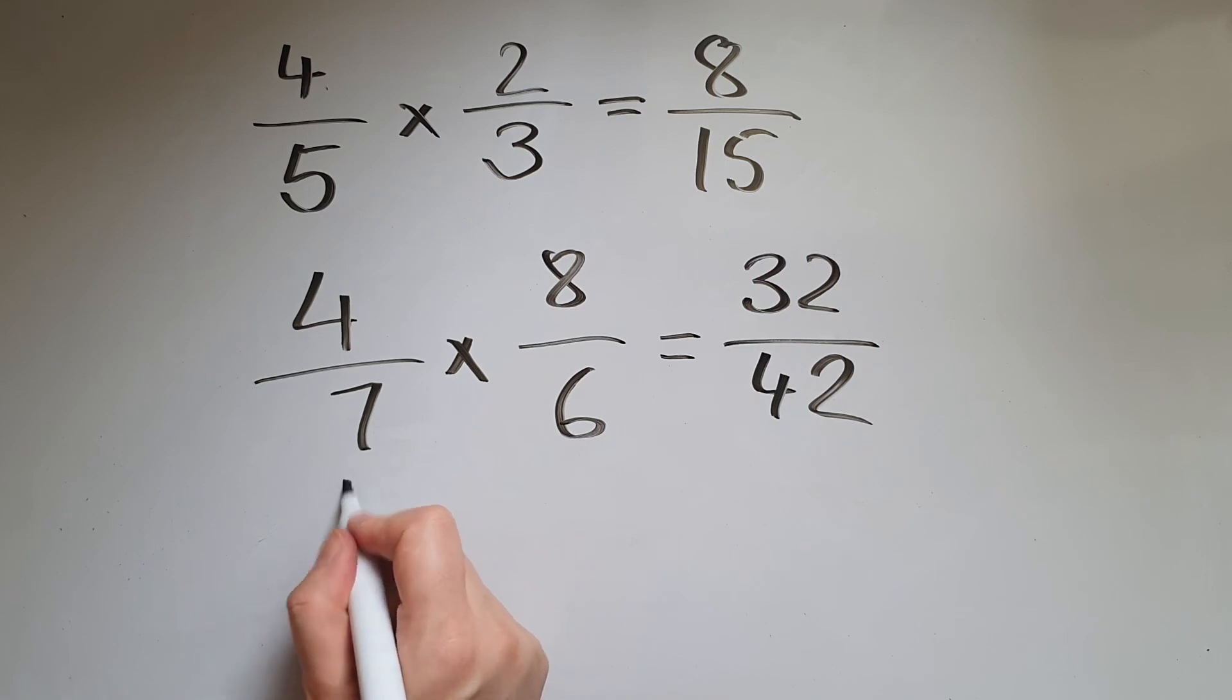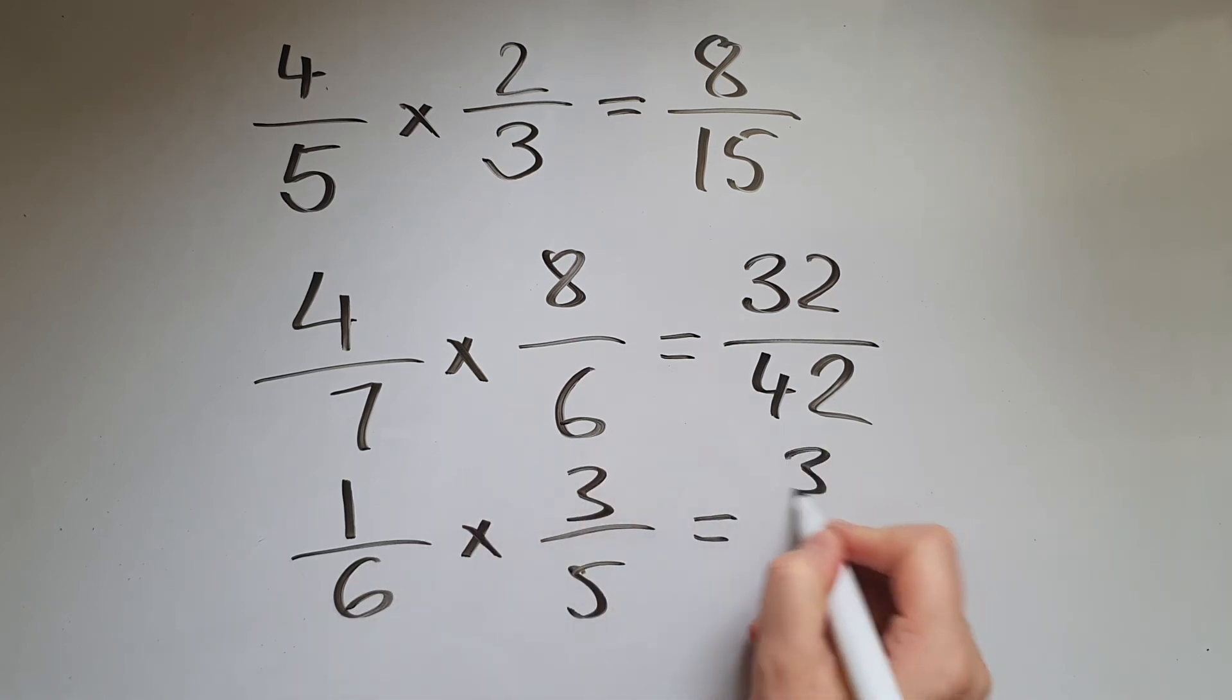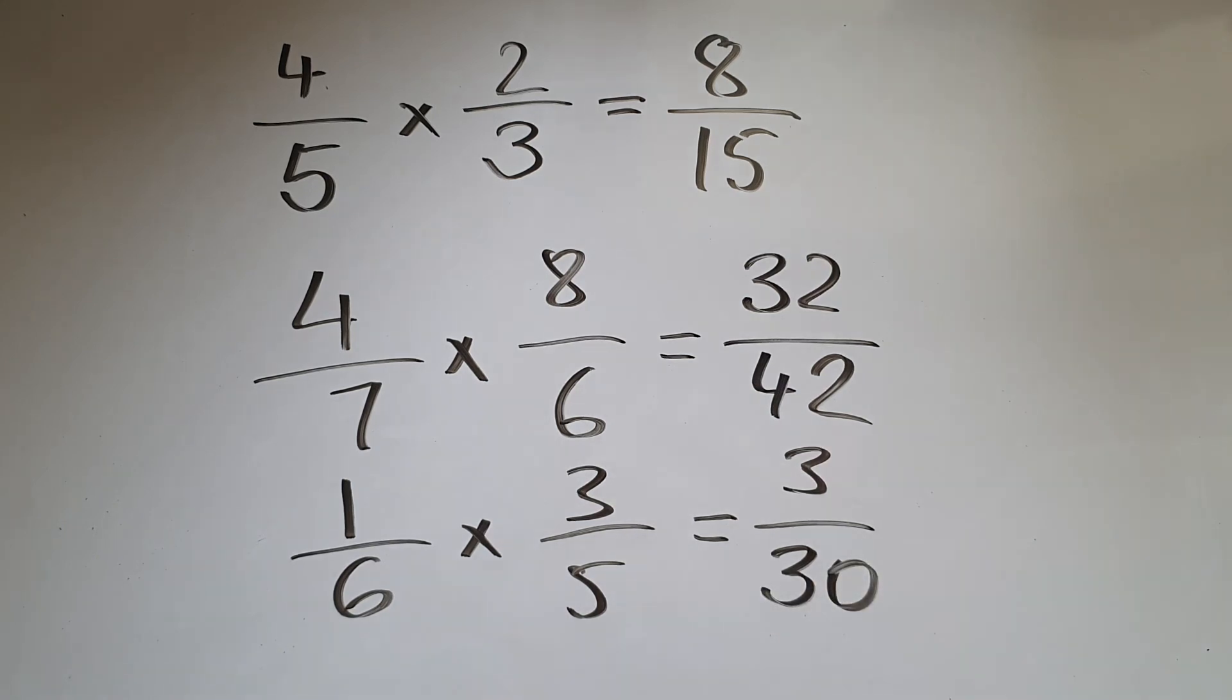Let's finally do one sixth times three fifths. One times three is three, six times five is thirty. Now some of these you can simplify further, but I'm not going to stop at that now because there will be another video about that.